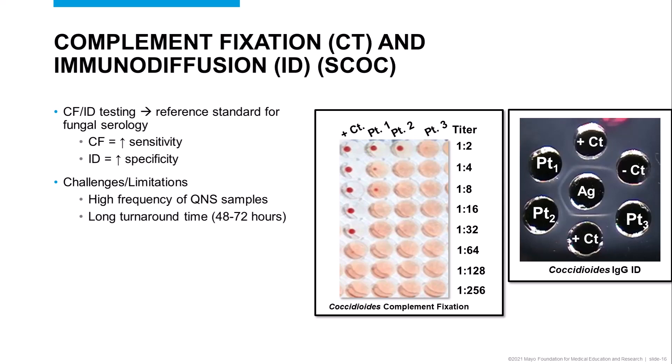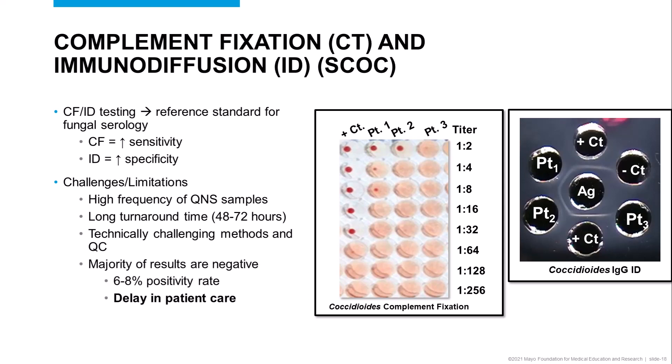These assays also take a long time to perform. From start to finish, due to incubation times, it takes anywhere from 48 to 72 hours to result the coccidioides IgG and IgM immunodiffusion plates. These assays are also very challenging to perform and to maintain, with a multitude of individual reagent quality control steps and potentially subjective result interpretation, leading our lab to have a set group of technologists trained to perform this testing to maintain standardization and consistency. The vast majority of CF/ID test results for coccidioides are negative — our positivity rate for these two assays combined ranges from 6 to 8% per month. So regardless of whether patient results are positive or negative, the time to results is 48 to 72 hours, which begs the question of whether we can improve on this.